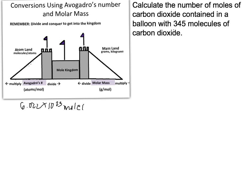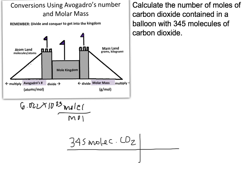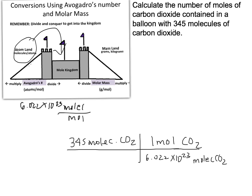It's going to be molecules per mole. What we've been given is 345 molecules of CO2 — carbon dioxide — and we want to go from molecules into moles. We're starting in atom land and going into the kingdom. Remember, anytime we're going into the kingdom, we're dividing and conquering. So 345 molecules is going to be divided by Avogadro's number: 6.022 times 10 to the 23rd goes on the bottom — that's molecules of CO2 per one mole of CO2. We calculate by multiplying the numbers on the top and dividing by the numbers on the bottom.